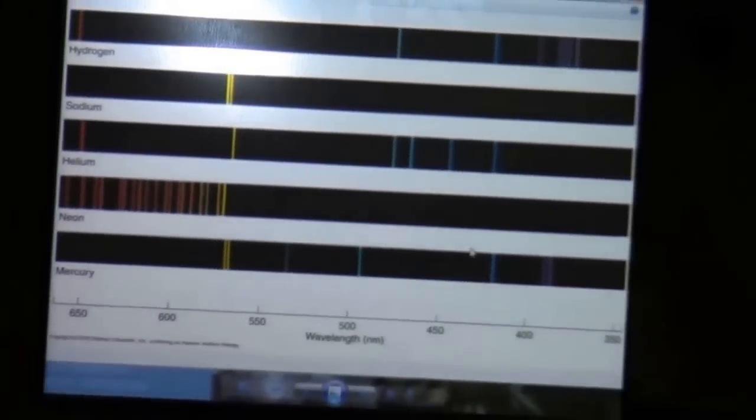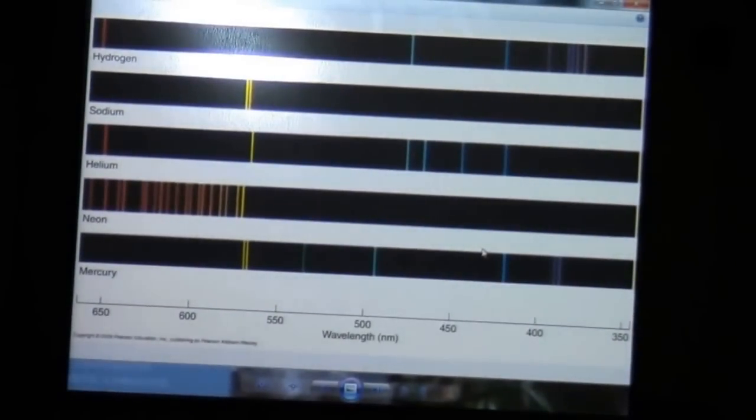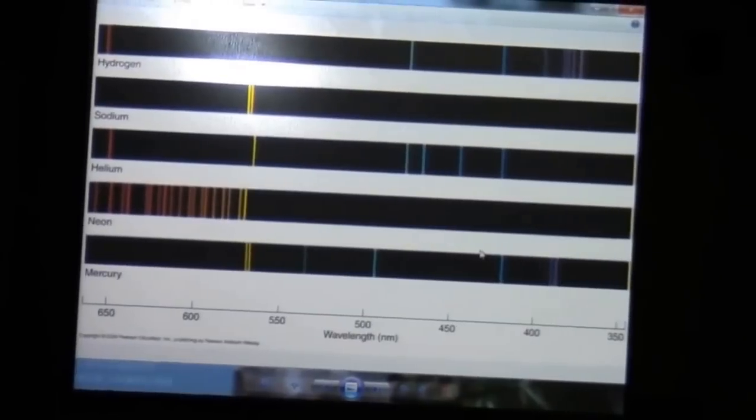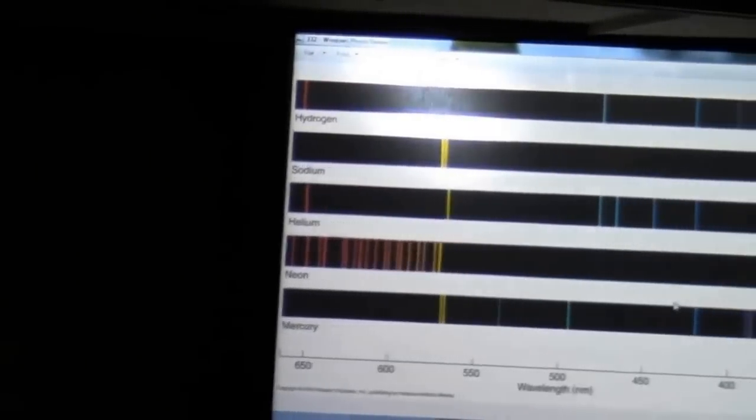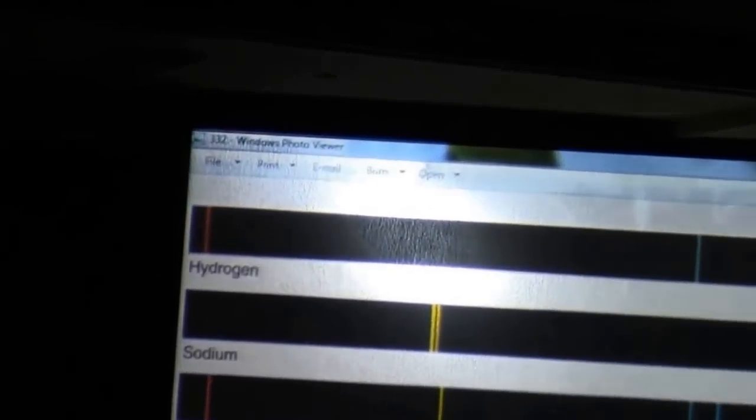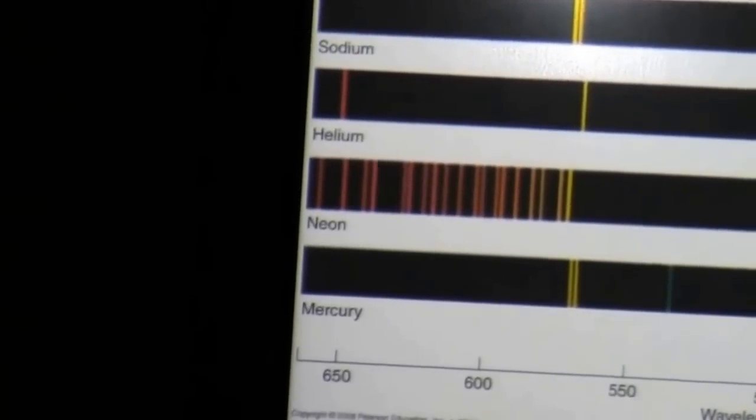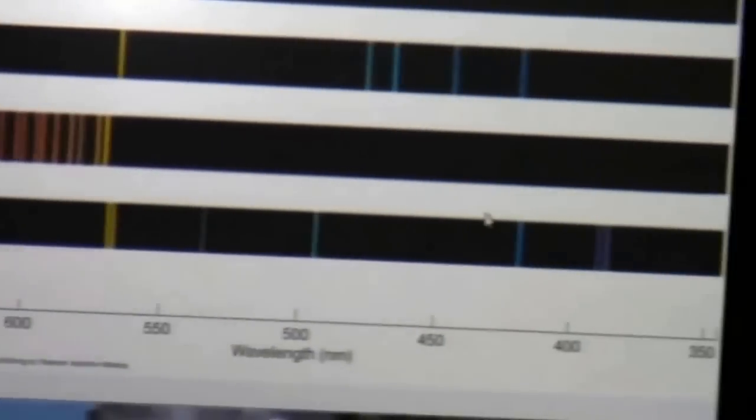So let's actually try this. So we'll use the diffraction gratings. I'll turn the lights off. What I have here are four tubes. Up here I have six. Hydrogen, sodium, helium, neon, mercury. These are the spectra you get at least in the visible part of the spectrum for these different elements. I have four of the tubes here. We'll see if you can identify them. And it's the same concept. If you can identify them at 10 feet or 20 or 30 feet, we can identify them at 10, 20, 30 light years.